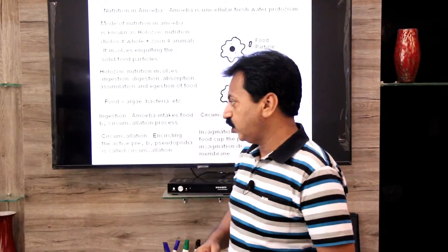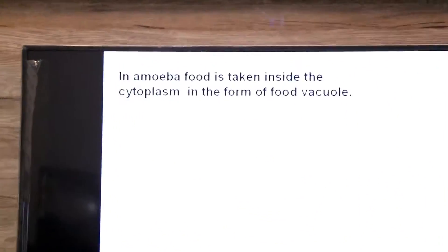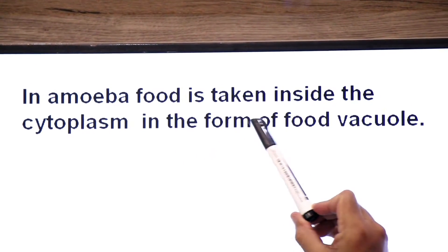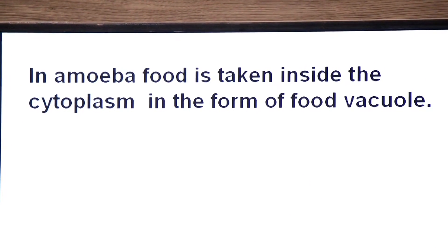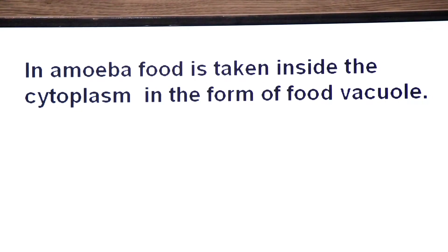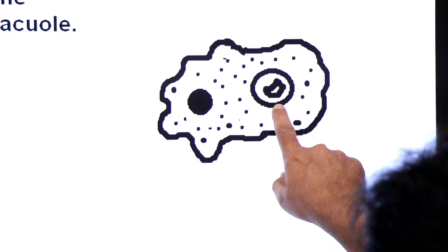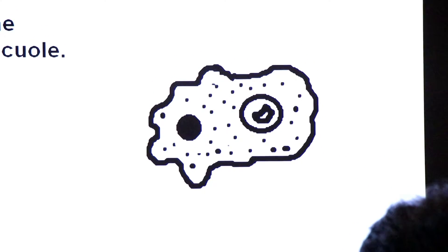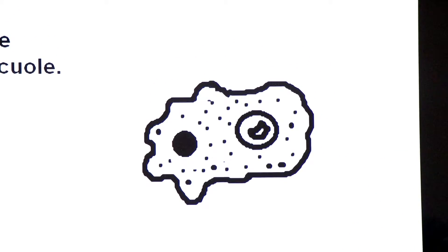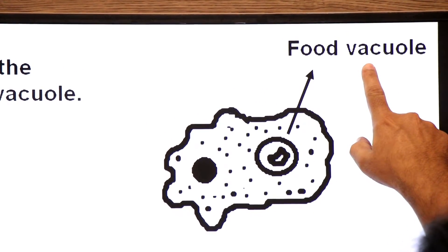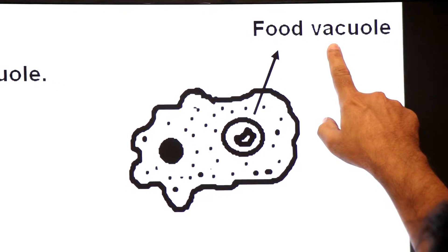The food vacuole is also called the gastric vacuole because the food is digested in it. In amoeba, food is taken inside the cytoplasm in the form of a food vacuole. Here you see food coming into the cytoplasm of amoeba in the form of a vacuole — this vacuole is called the food vacuole.